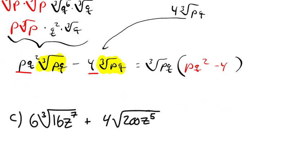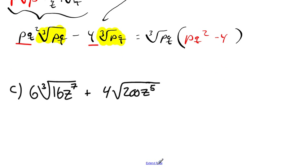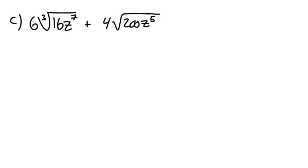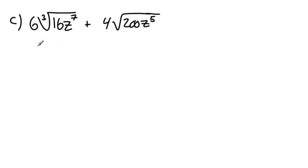Now for part C. We have 6 times the third root of 16z to the seventh, plus 4 times the square root of 200z to the fifth. Let's break the first term down into two radicals: 6 times the third root of 16, times the third root of z to the seventh.